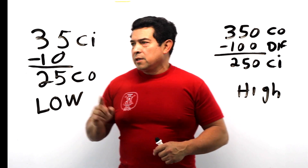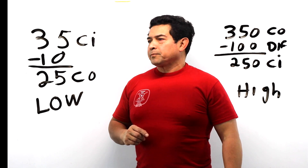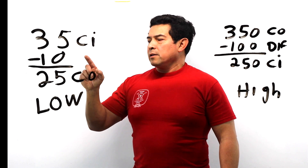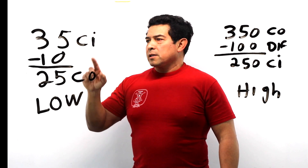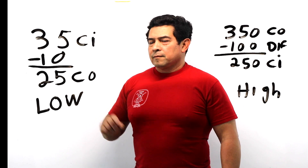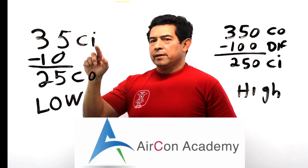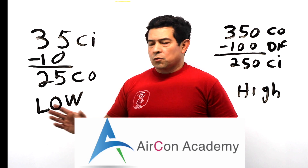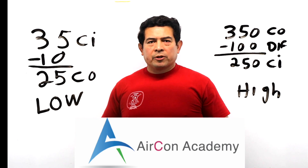On the low pressure switch, the cut out is the cut in minus the differential. So this would be your low pressure switch and that would be your high pressure switch.